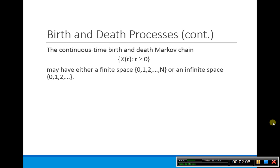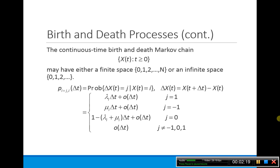Birth and death processes can be finite - you can have some limiting number capital M - or it can have an infinite state space. Basically you can only go up, down, or stay the same in any small period of time. If we look at delta x, that's x at time t plus some small delta t minus x at time t. During that small time, one event can happen: I can either increase by one, decrease by one, or stay the same. The probability of anything else happening in this small time delta t is so infinitesimal that we don't really consider it.